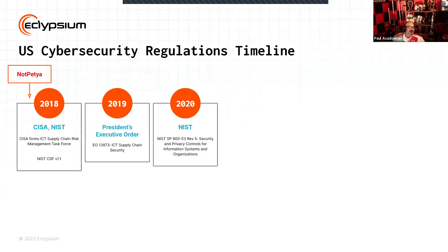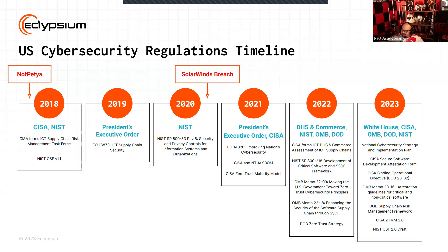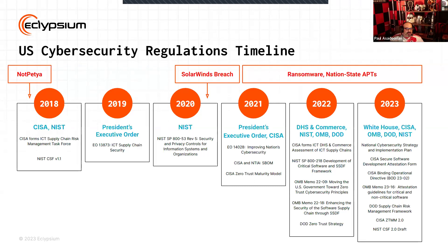CISA formed a Supply Chain Risk Management Task Force in 2018 that led to the NIST CSF. There was a 2019 presidential executive order that also talked about supply chain security. NIST SP 800-53 Revision 5 added certain controls for supply chain-related activities in 2020. Then of course we got the very large incident and breach of SolarWinds, which shined a spotlight on supply chain security — specifically for software. There have been many breaches after that, including the MOVEit breach, that relate to supply chain security.